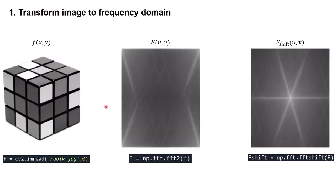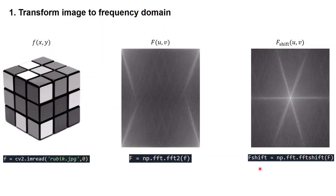Now I will briefly explain the step-by-step implementation of frequency domain filtering using the Butterworth filter in Python. The first step is to open your image and transform it into the frequency domain. In this example, I open the Rubik image using the OpenCV function cv2.imread, setting the second argument to 0 to read the image as grayscale. Next, we use the NumPy function np.fft.fft2 to transform the image to the frequency domain, and we shift the low frequencies from the corners to the center using np.fft.fftshift.